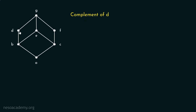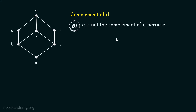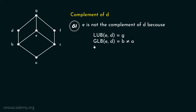Let's find the complement of element D. E is not the complement of D because the least upper bound of E and D is equal to G — this is the greatest element — but the greatest lower bound of E and D is equal to B, which is not equal to A. Hence, E is not the complement of D.